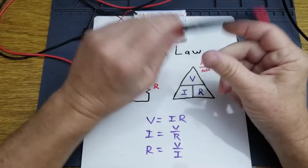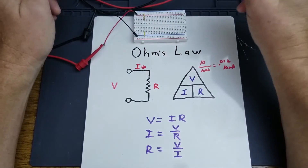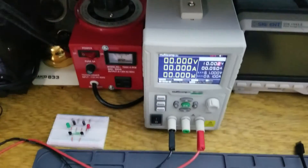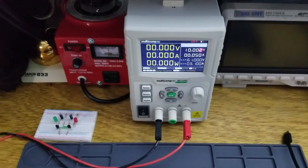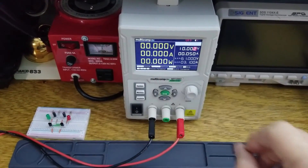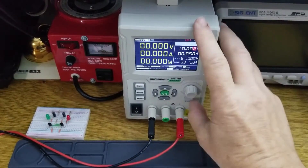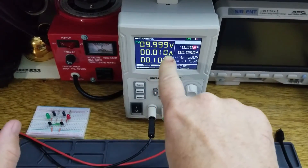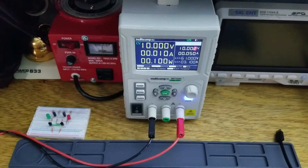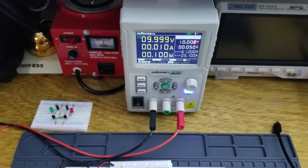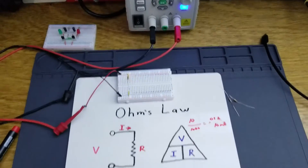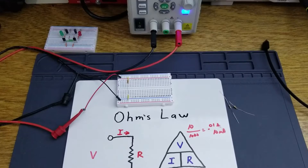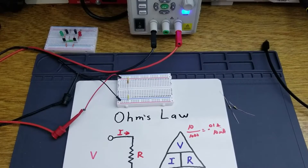I've gone ahead and put this resistor in here, and we have a power supply right here. It has a current readout and I'm going to go ahead and turn that on. That's going to give us the 10 milliamps that we just calculated. So that's the current through a 1,000-ohm resistor at 10 volts.